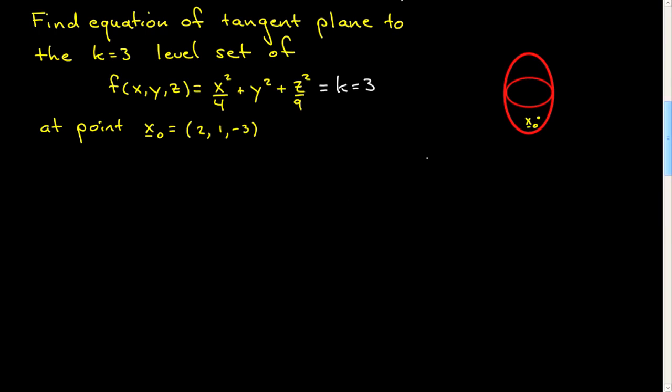We're going to need the gradient of the function. Let's do it at a general point first. Differentiating, that looks to be x/2, this looks to be 2y, this looks to be 2z/9.